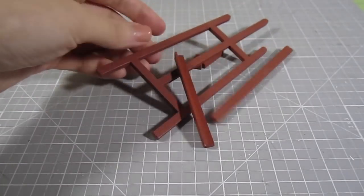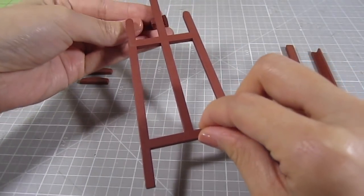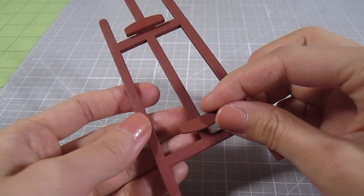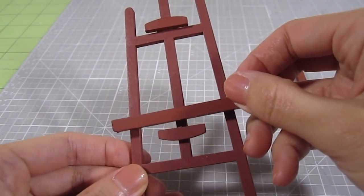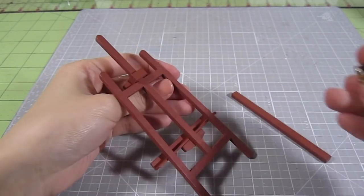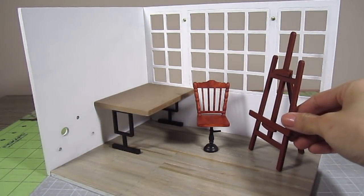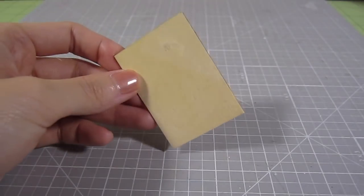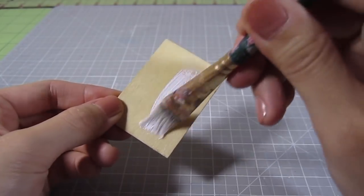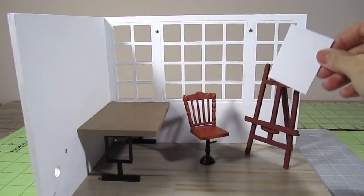Next up is the easel. The easel is super simple to assemble using the instructions. The only change I made here was to add a hinge to the back leg. This is definitely not necessary and you can just glue the back leg on. Place the easel on the right side of the room. The kit comes with this tiny wood panel for a framed picture. I just paint it white to look like canvas and plop it onto the easel.